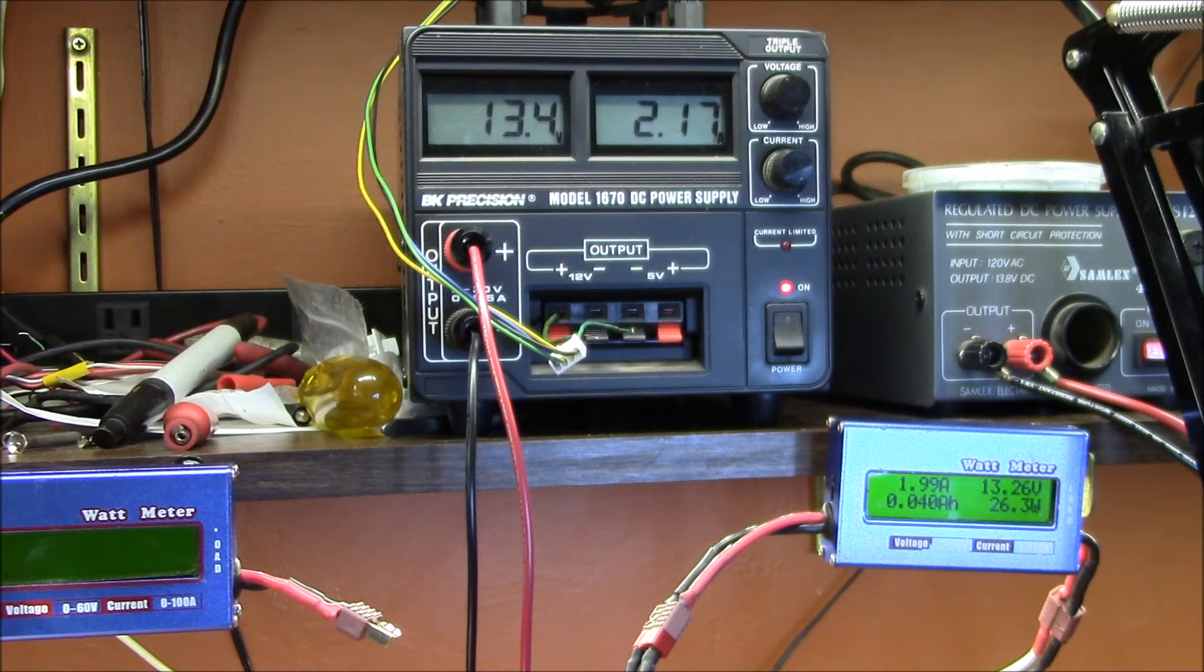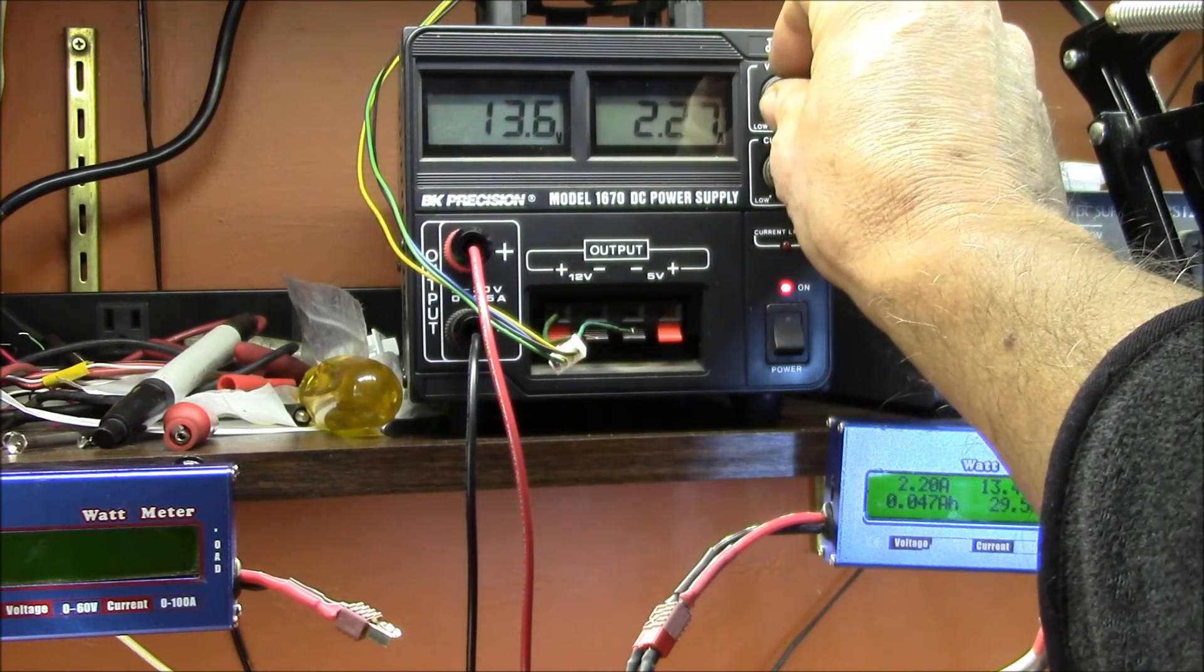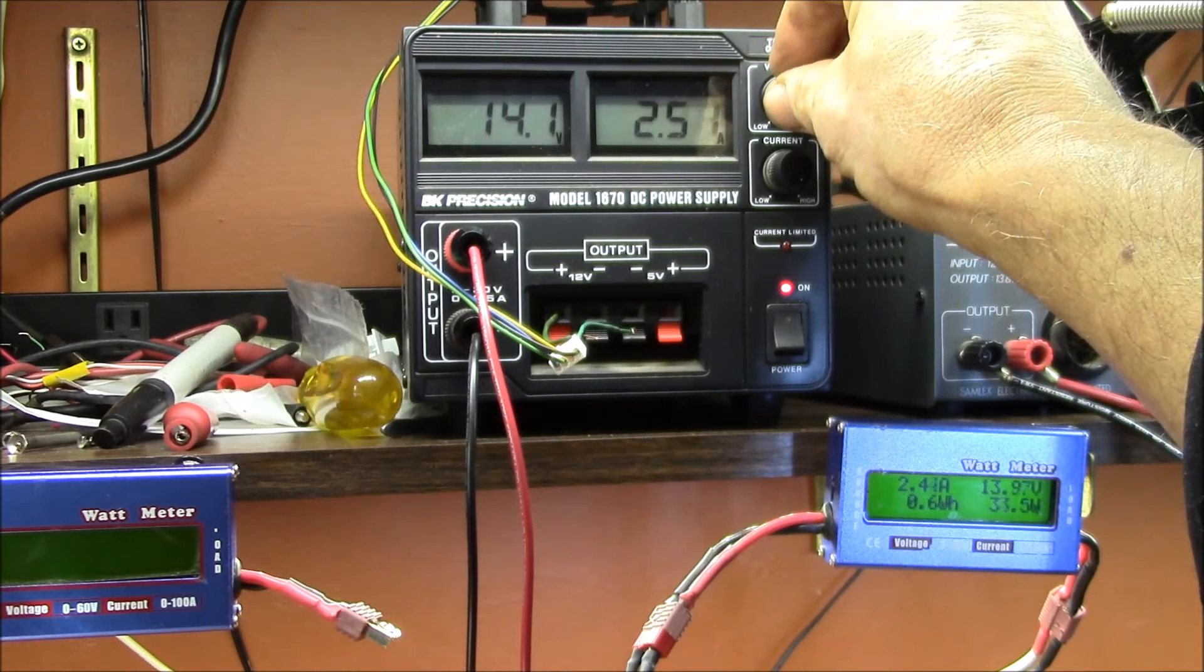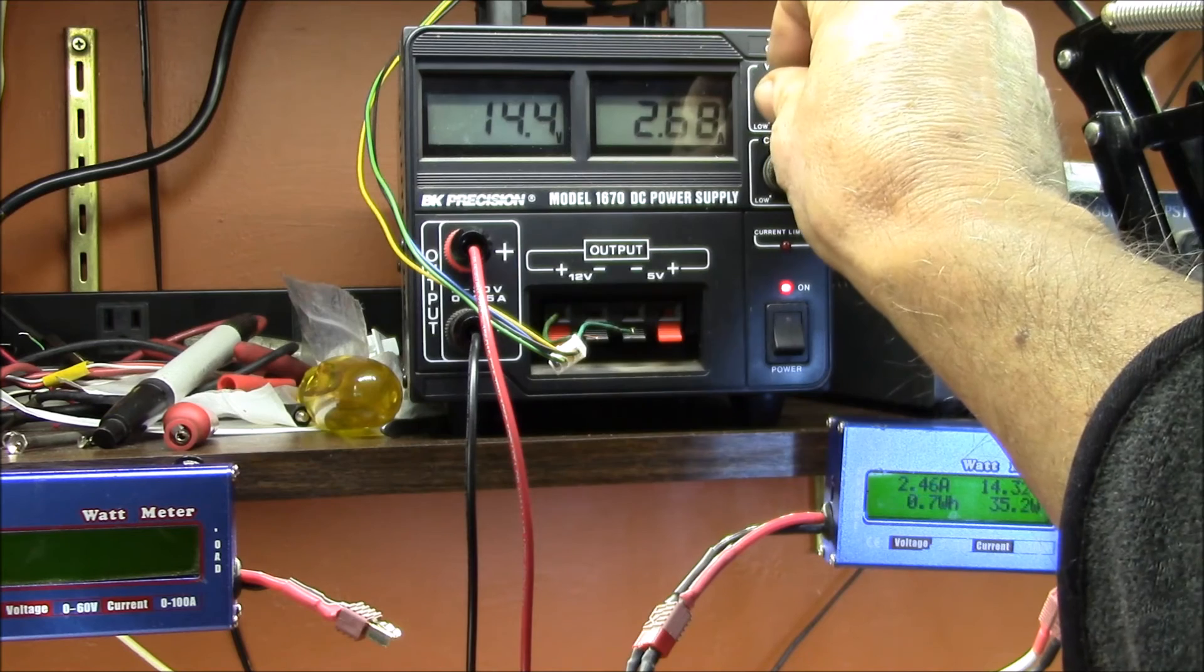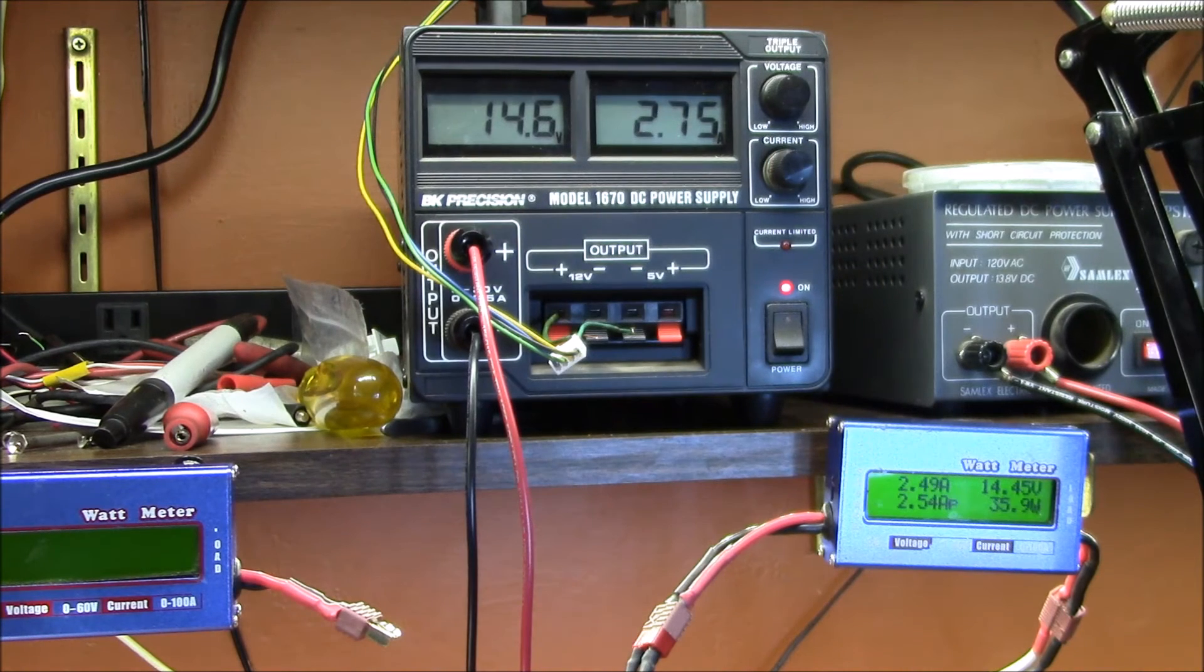So that leaves about 10 and a quarter volts divided across the 3 emitters or 3.42 volts per LED. And you can notice that the current keeps rising as I increase the voltage. So if I go up to say 14, that might be a charging voltage on a battery. And we're up to about 2.5 amps at 14.5 volts. So running one of these lights off a 12 volt solar battery bank is problematic, as the voltage while charging can be over 14 volts.